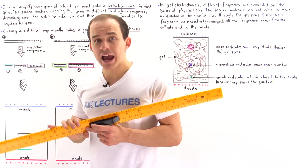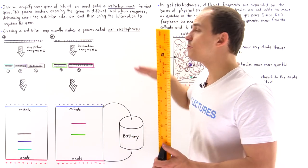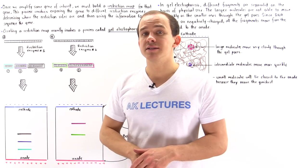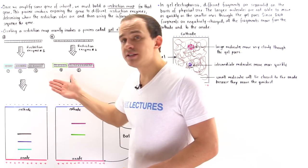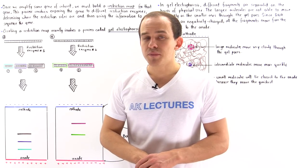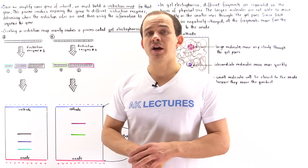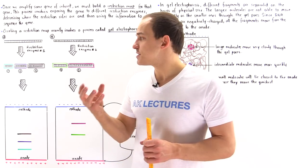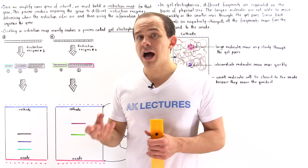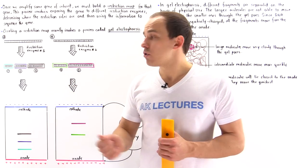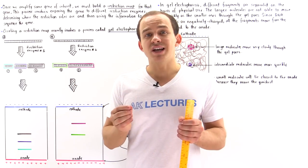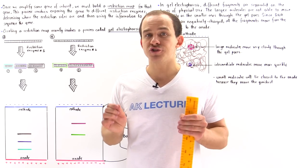Once we obtain these fragments, we expose them to the process of gel electrophoresis. This process ultimately separates these three DNA fragments based on their physical size. Gel electrophoresis is basically the process by which we take our fragments, place them into a special type of porous gel, and then allow those fragments to move through the pores of the gel as a result of an electric field that exists within that gel.